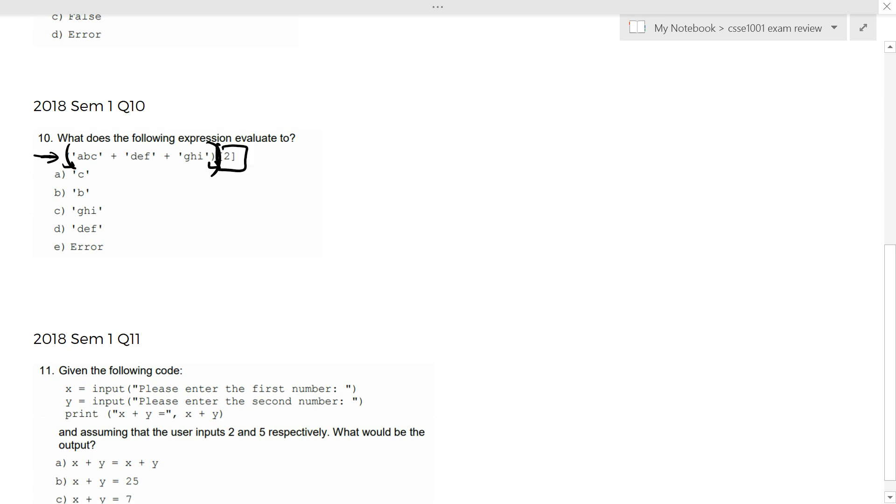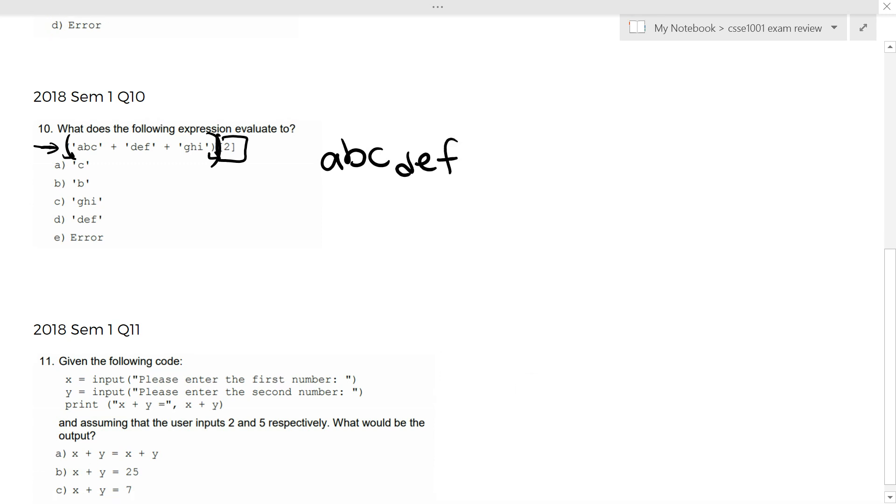So ABC plus DEF, just simple string addition, GHI. That's our string. We get the tooth thing from it. So zero indexing. Zero, one, two. Answer should be C.